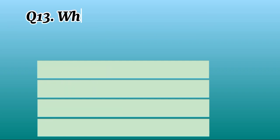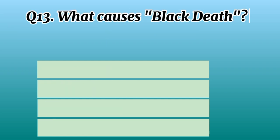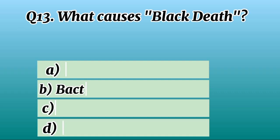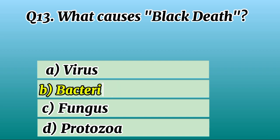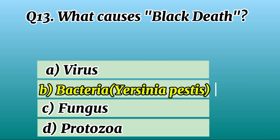Question 13. What causes black death? Correct option B: Bacteria — Yersinia pestis.